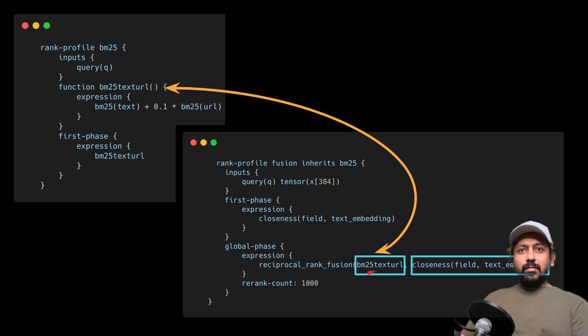Sorry, not both - this function in reciprocal rank fusion function which takes BM25 text URL and the closeness, which is how close the text embedding of query are to the text embedding of documents. And here we used angular distance. So if you missed the previous one you should definitely take a look at that. That's where we designed the whole hybrid ranking system.